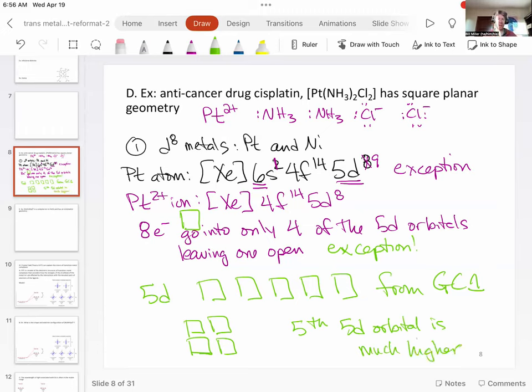So we'll talk more about why that is, but it turns out that all eight of the electrons fill the bottom four orbitals, leaving the top orbital open, and that is the first orbital that is hybridized when we do the hybridization with these ligands.